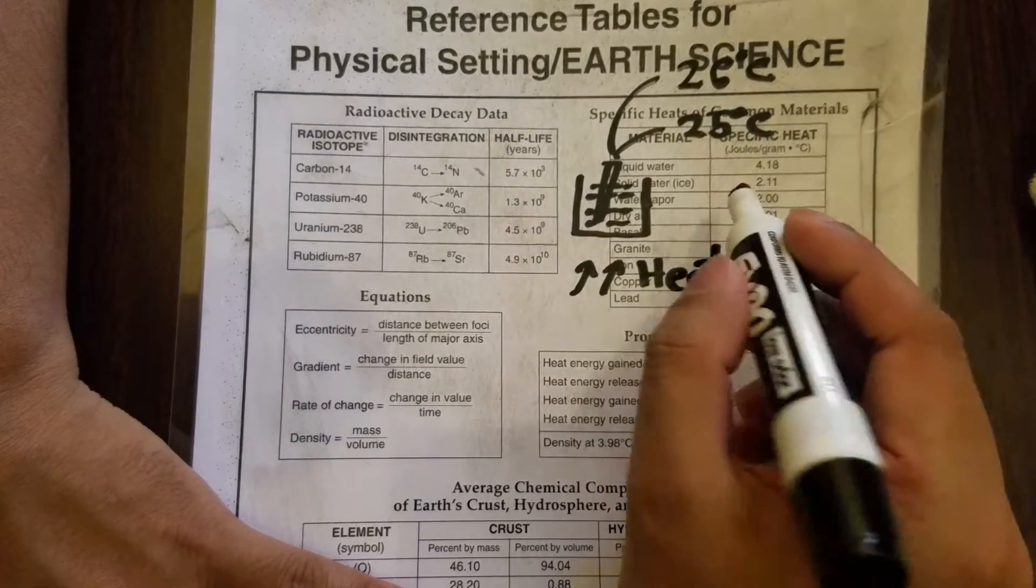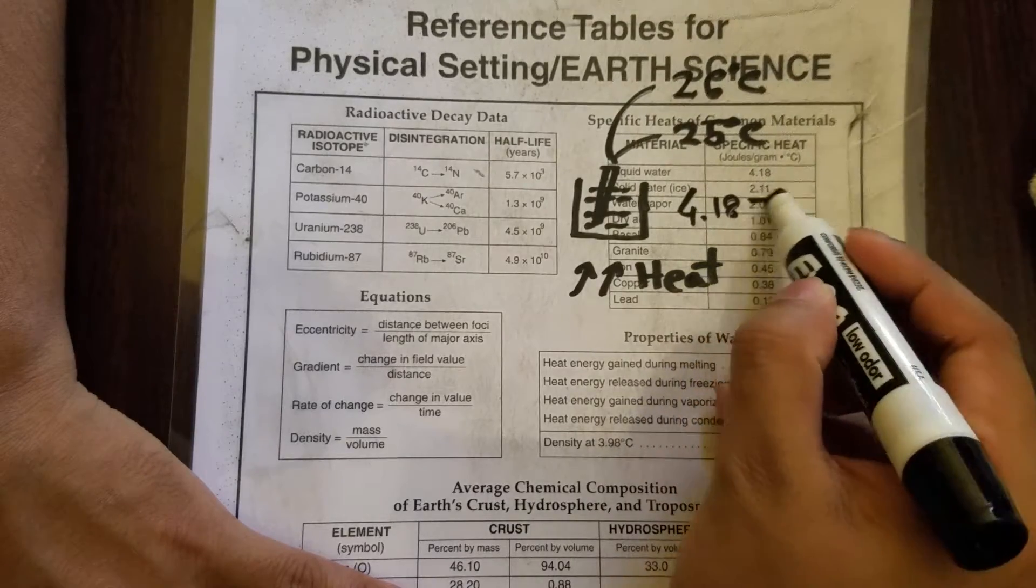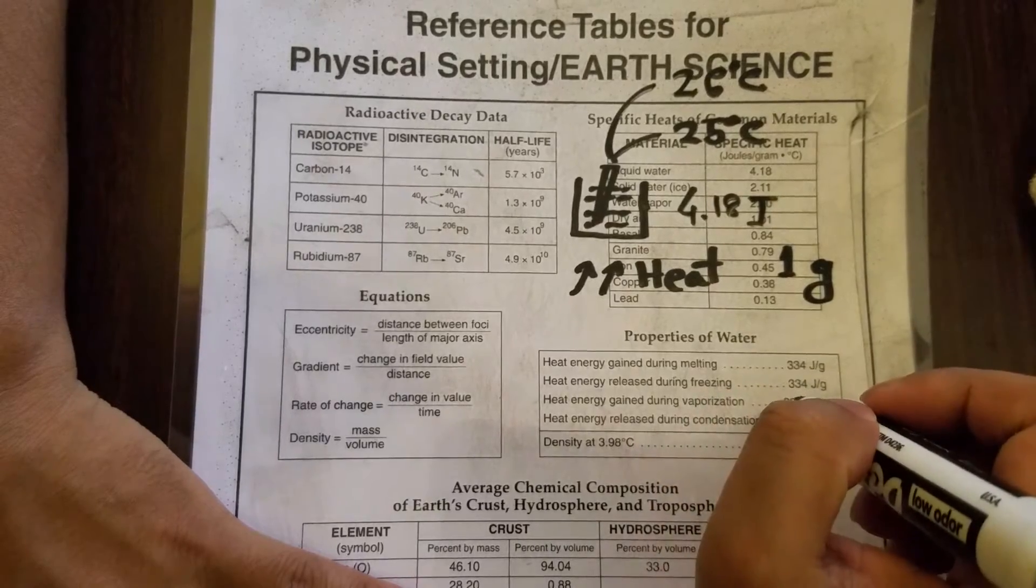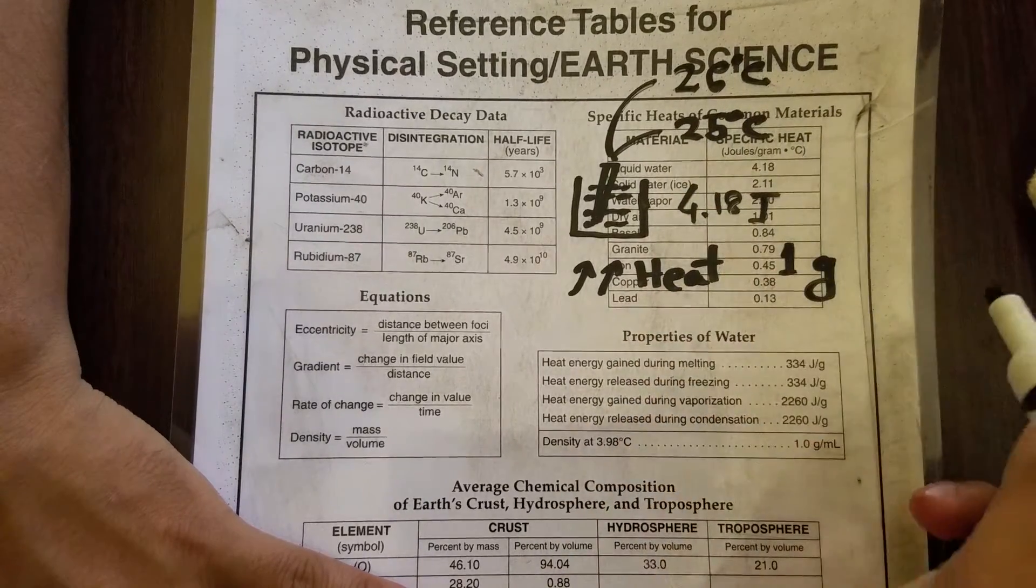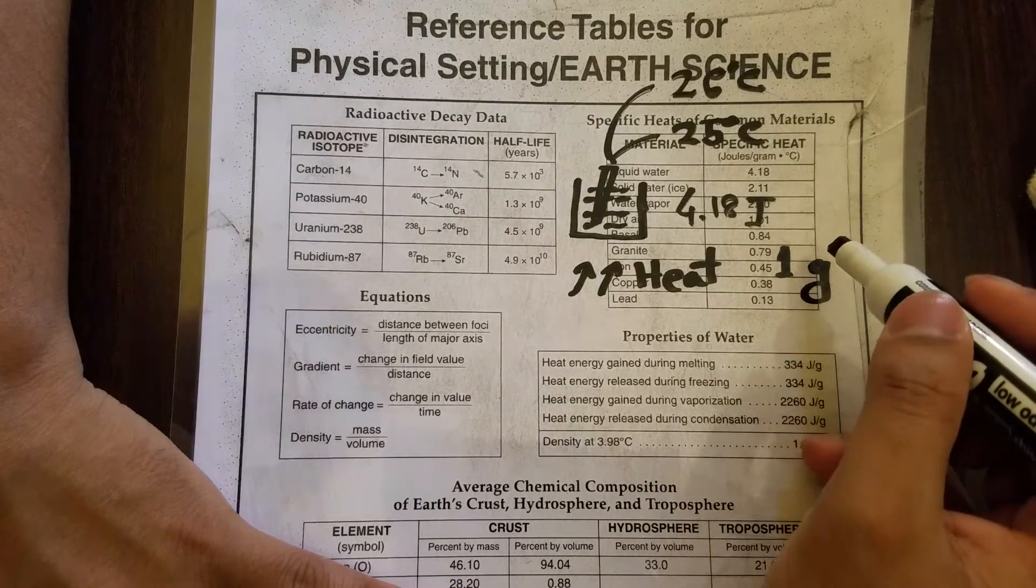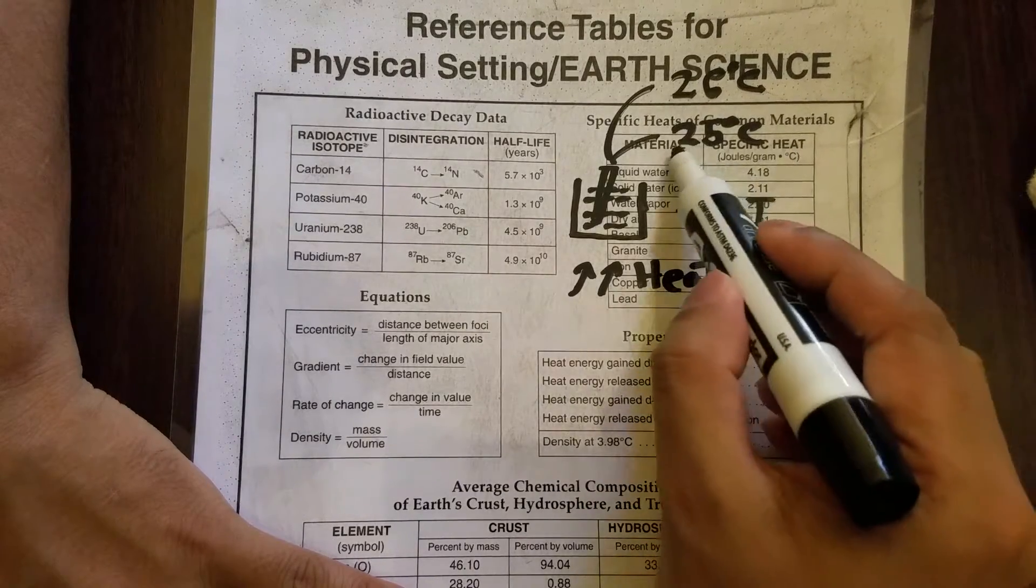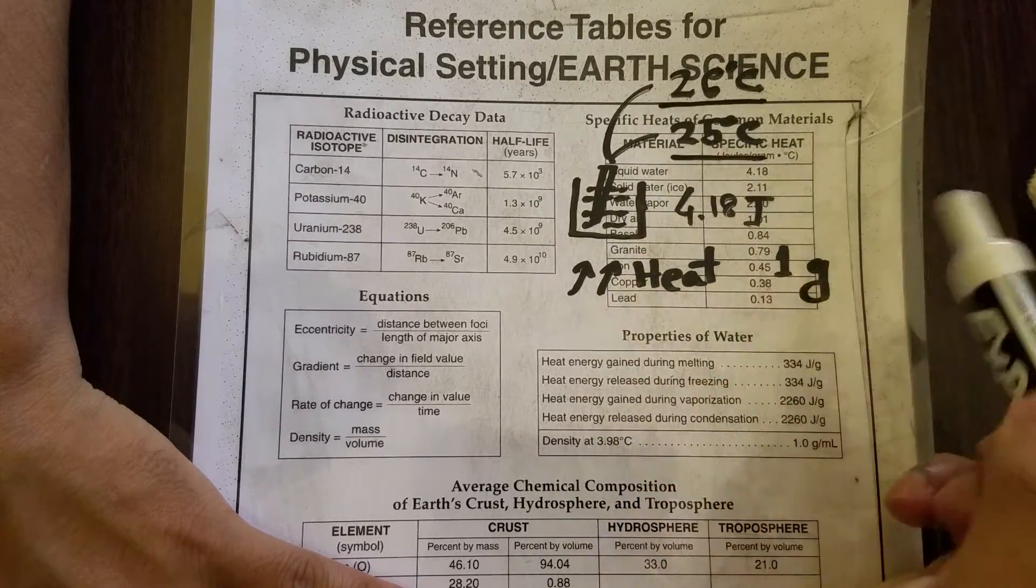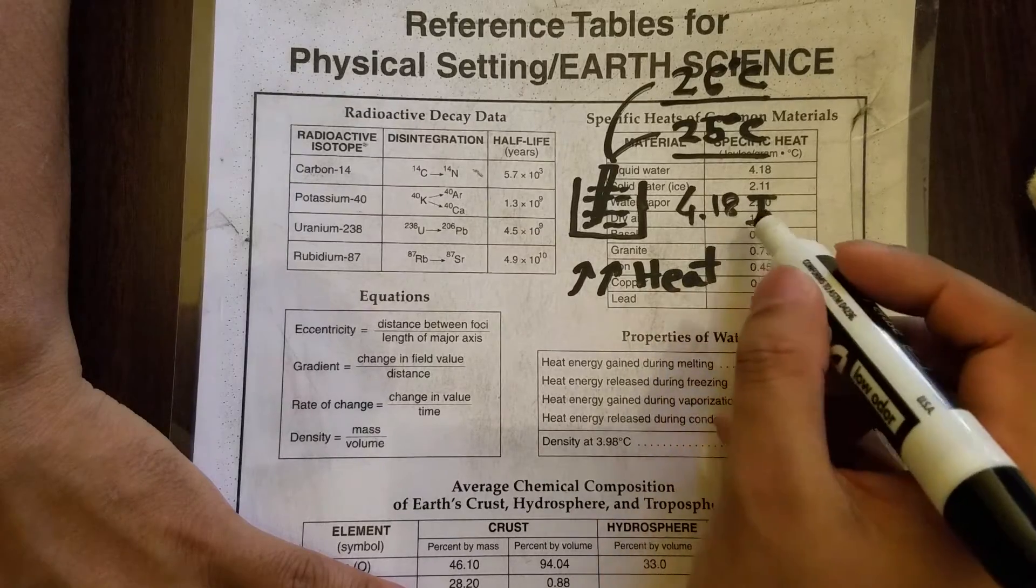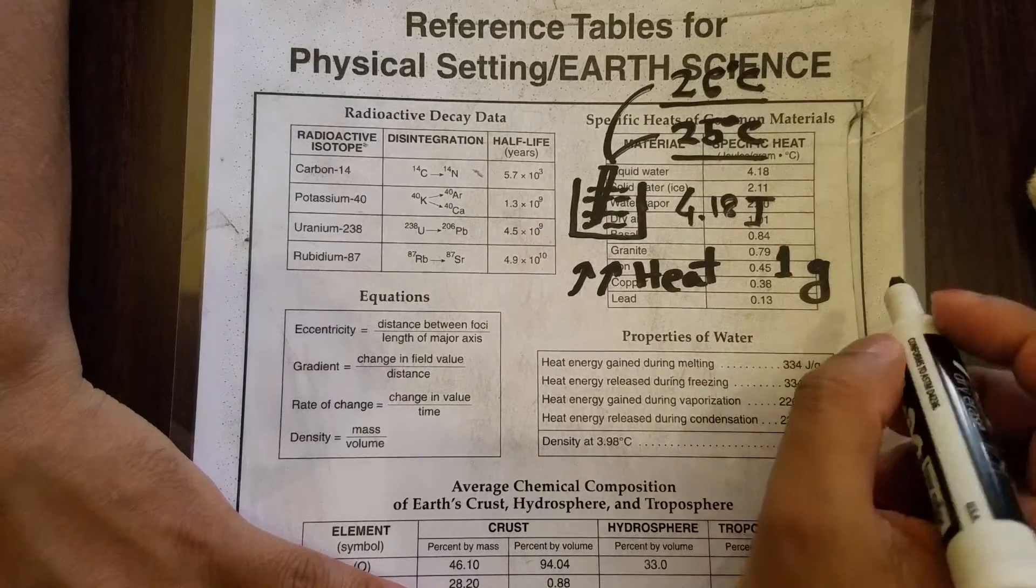So if you're applying heat, you need to apply 4.18 joules for 1 gram of water to raise the temperature to 26 degrees Celsius. So that is specific heat. You had water at 25 and you want to raise the temperature 1 degree, so to raise the temperature 1 degree you need to apply 4.18 joules. That's for water.